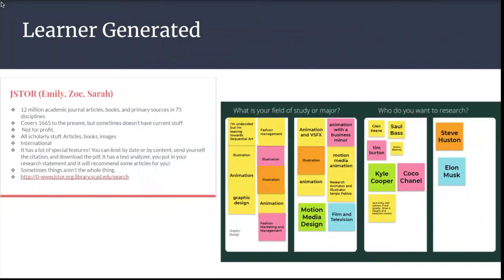The two examples here — one a Google Slide and the other a Jamboard — provide an example of students taking a lead in producing content for themselves and others in the class. Students were given a database like JSTOR, a few guiding questions, and then they had to make a slide to teach others about that database. In the Jamboard, students had the flexibility to add their answers and also help other students out by adding content and sharing ideas and resources.